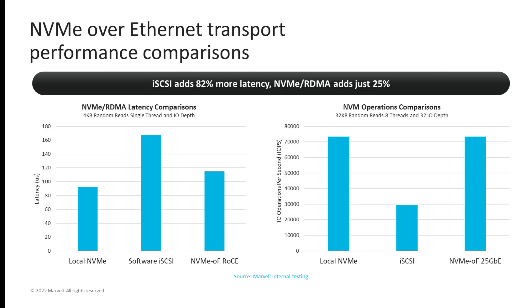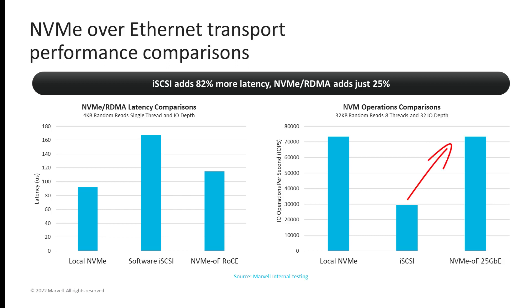NVMe enables better performance, and these slides bear this out, comparing Ethernet iSCSI and NVMe over RoCE to local NVMe performance in terms of both latency and IOPS. On the left, you can see that NVMe over RoCE has about 40% lower latency than iSCSI with software initiators. Because NVMe over RoCE uses RDMA technology, this offloads some of the IO processing by allowing the NIC to directly access memory for IO transactions, reducing the latency of each IO process. On the right, NVMe over RoCE delivers similar IOPS performance to local NVMe storage and much higher IOPS than iSCSI with software initiators.